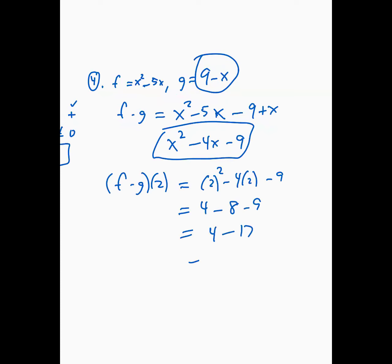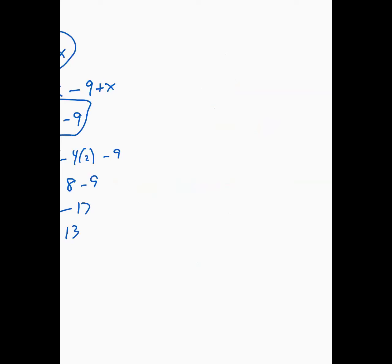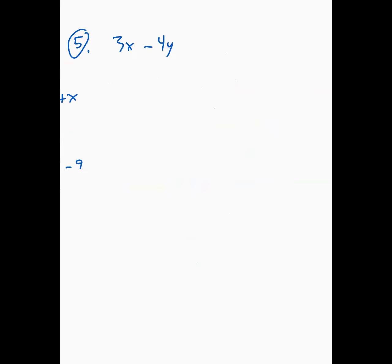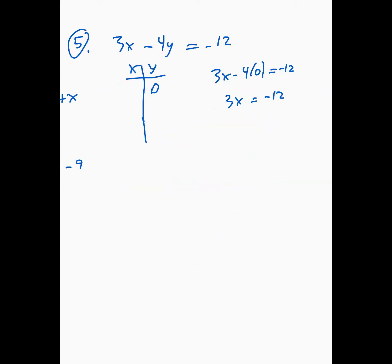Let's go to question number 5. The equation is 3x minus 4y equals negative 12, and we're supposed to plot the intercepts. To find the x-intercept, plug in 0 for y: 3x equals negative 12, so x equals negative 4. So negative 4 is the x-intercept.